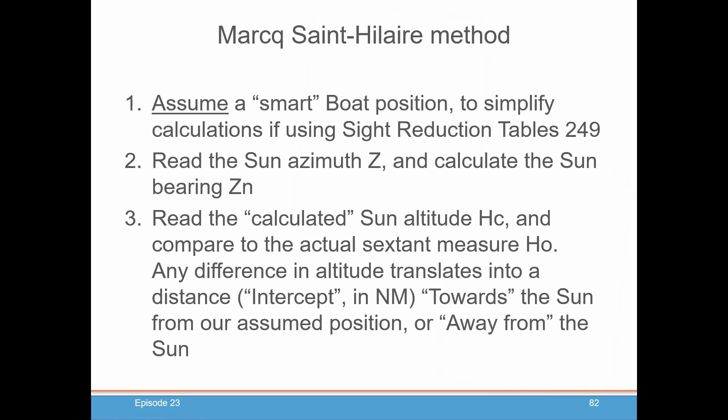Once you have your smart boat position, your assumed position, you read out of the sight reduction tables the Z and the ZN, as we've done in previous episodes, and then you calculate your HC, which we've done now in a few episodes, and you're going to compare that to the actual sextant measure HO, after you do all of the adjustments to your sextant height to get HO. And the difference in that altitude will translate into the distance called the intercept in nautical miles, either towards the sun from our assumed position or away from the sun from our assumed position.